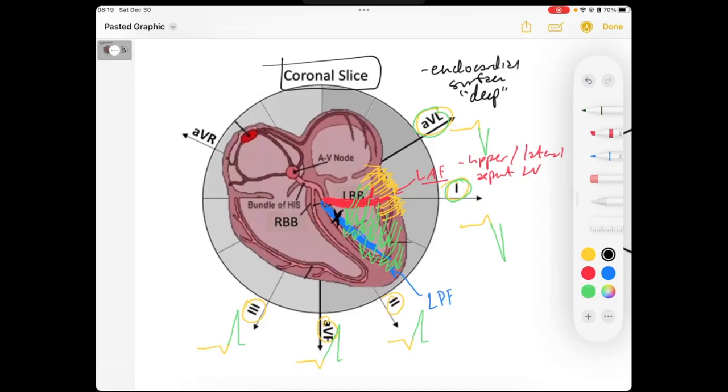Notice our axis. We have right axis deviation. So you'll see right axis deviation in the left posterior fascicular block. So you need to rule out right ventricular hypertrophy as a cause before you can say that this is a left posterior fascicular block.